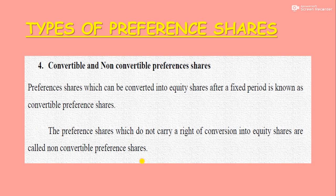Last type: convertible and non-convertible preference shares. Preference shares which can be converted into equity shares after a fixed period are known as convertible preference shares। उनके साथ एक time period attach होता है — 2, 5, 6, या 8 years — उस fixed time period के बाद उन preference shares को equity shares में convert कर दिया जाता है। Non-convertible preference shares में conversion का कोई right नहीं होता। That's all about the 8 types of preference shares।